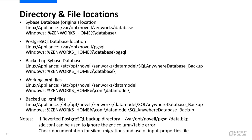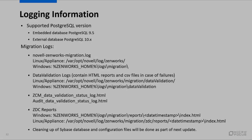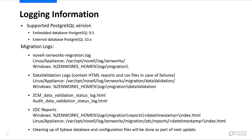Check documentation for silent migrations or use of the input properties files (the customization file). Logging information: supported PostgreSQL versions are embedded database PostgreSQL 9.5 and external database PostgreSQL 10.x. Migration logs are in the logs directory under a migration subdirectory, containing separate migration logs and data validation logs.